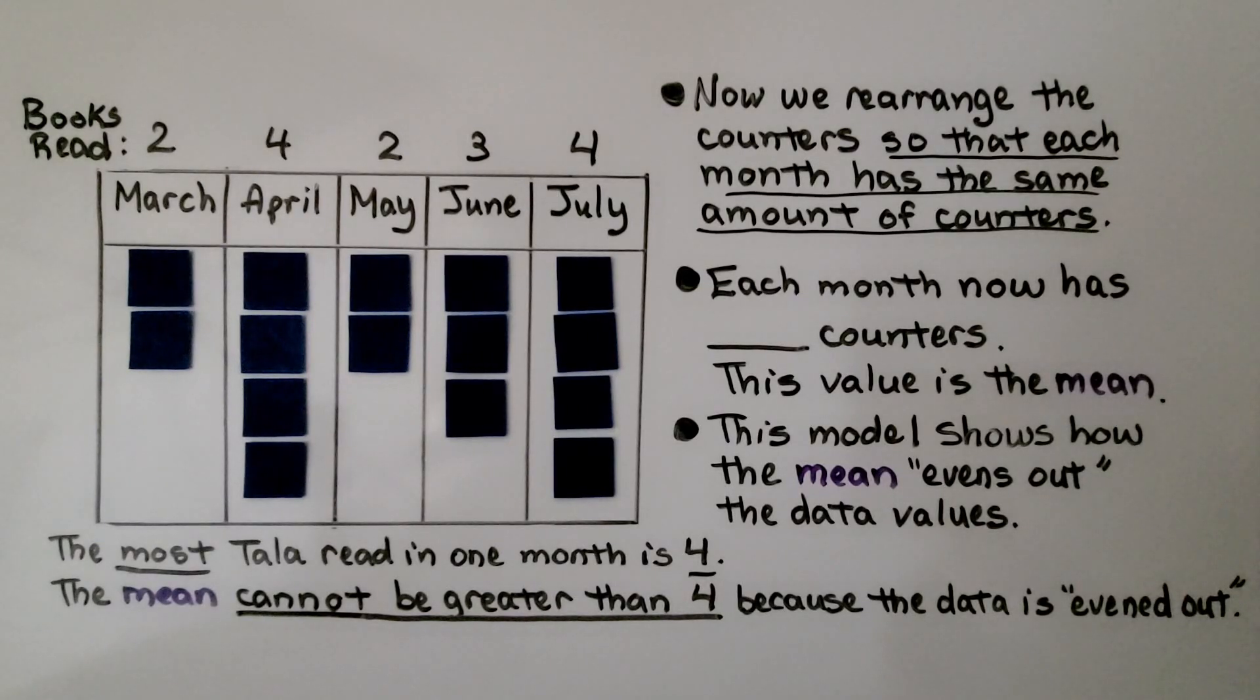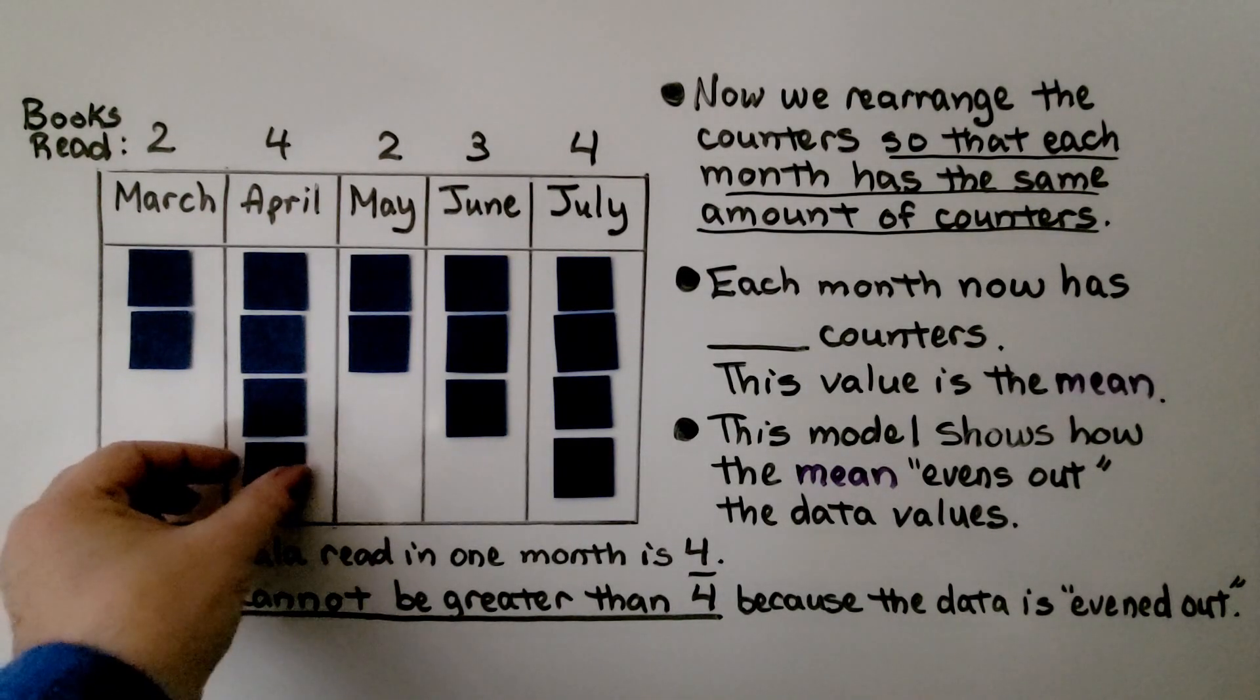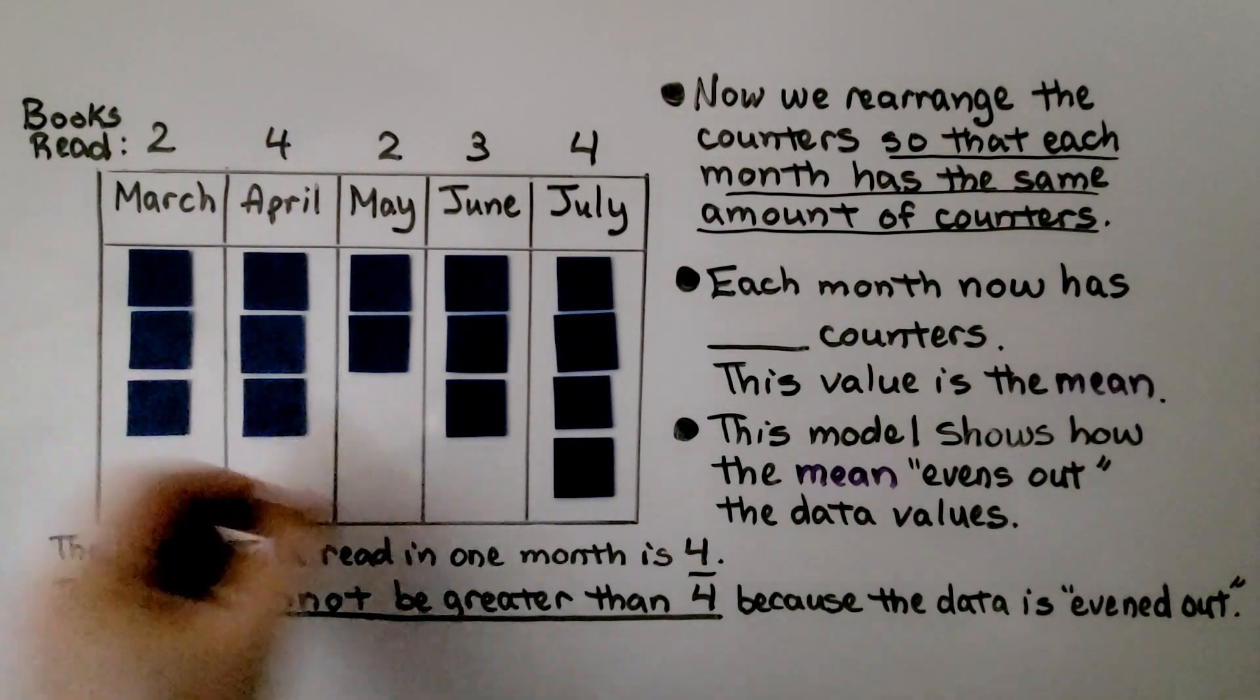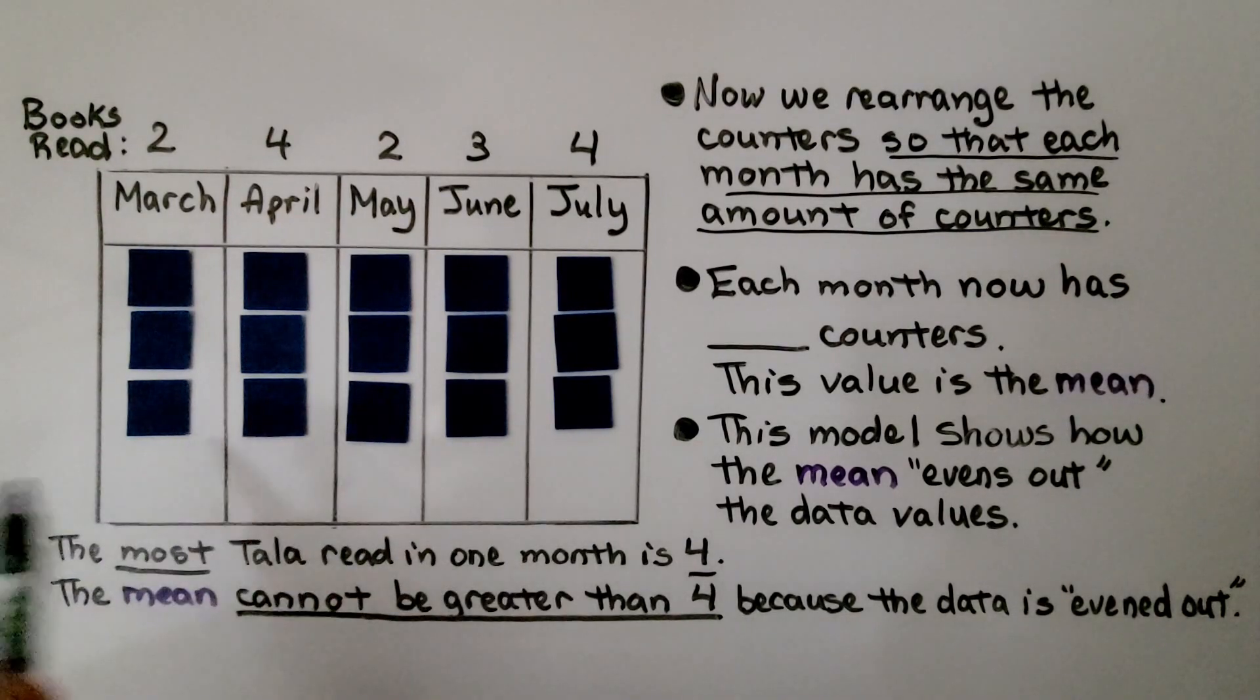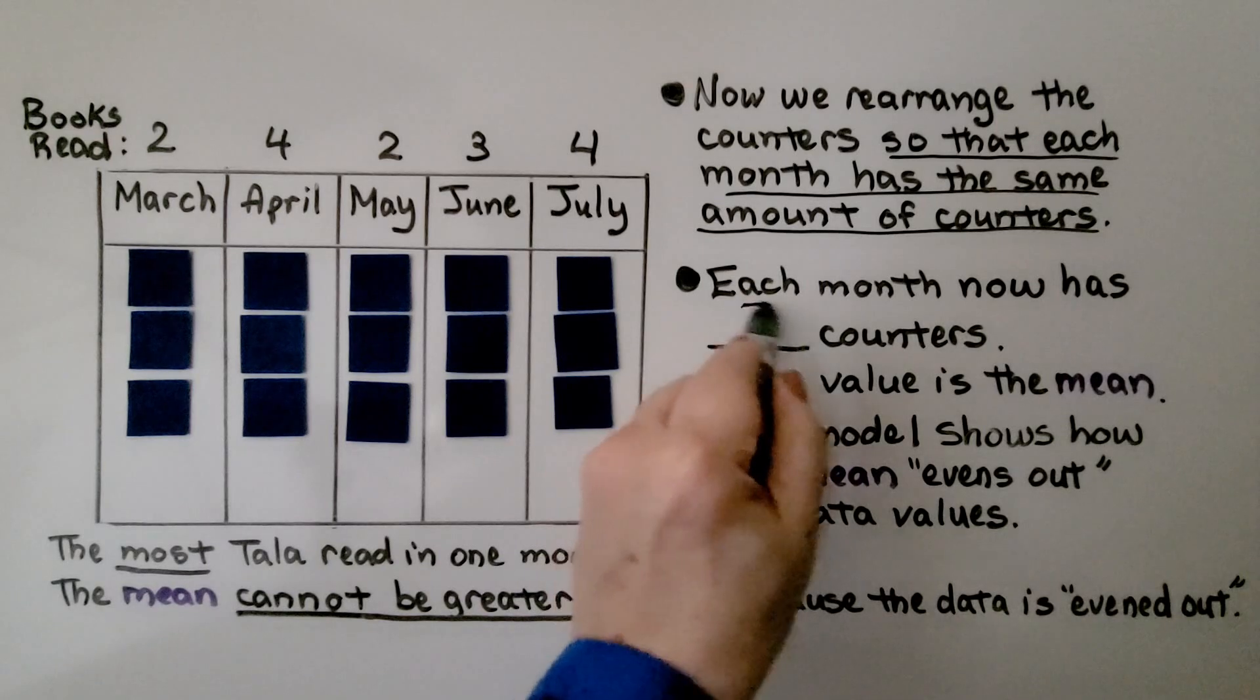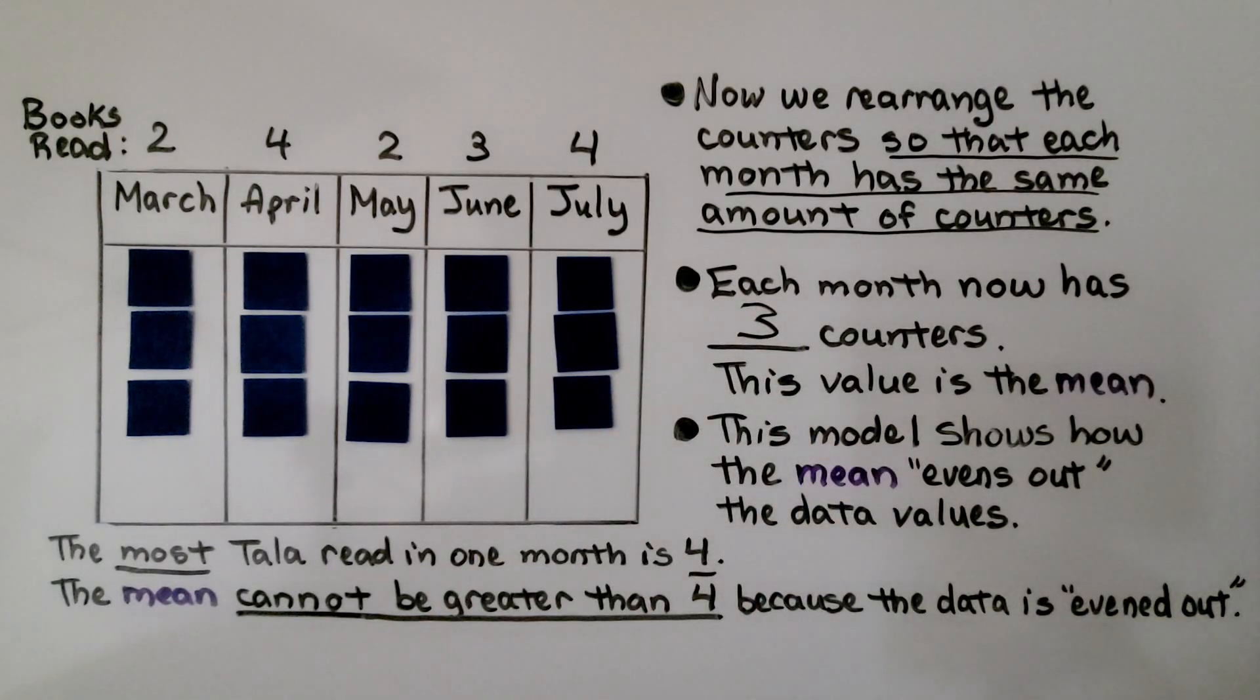Now we rearrange the counters so that each month has the same amount of counters. So we can put this one over here and this one over here. Now each month has the same number of counters. Each month now has three counters. This value is the mean. Three is the mean.